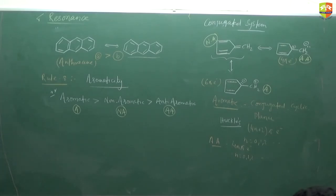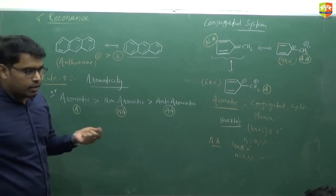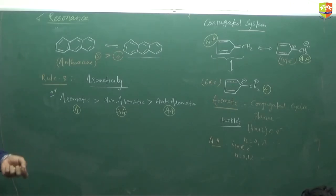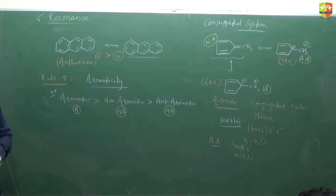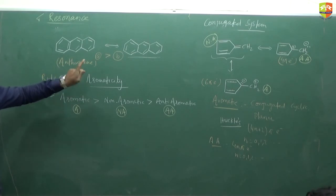So these are the rules we follow to find out the stability of resonating structures. Bond order depends upon the stability of the resonating structure — the RS which is more stable contributes more. Bond order can have fractional as well as integral values, as we discussed in chemical bonding, and fractional bond order is possible in molecules which have resonance.